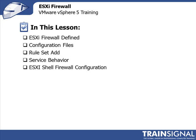In this lesson we want to focus on ESXi Firewall. We're going to start off by talking about what ESXi Firewall is and how to define it. We're going to talk about the configuration files and how you configure it, how you add rule sets to this firewall, what the service behavior is like — does it come up automatically? — and then we're going to talk about the ESXi Shell Firewall configuration. This is going to be a fun lesson, so let's get started.